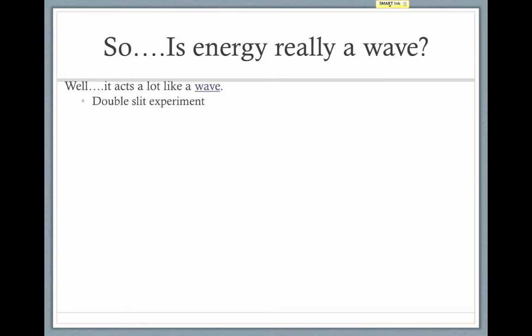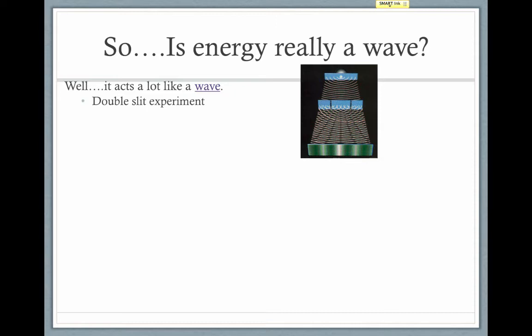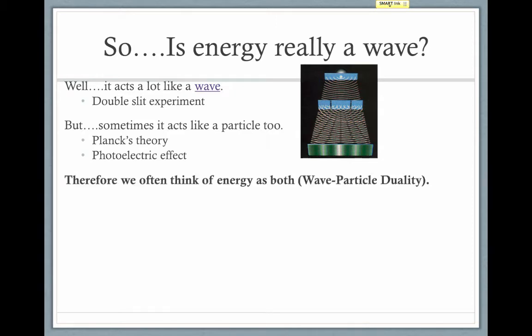This led Einstein to propose that maybe energy isn't really a wave at all. We think of energy like a wave. You probably recall the double slit experiment from physics class. This is evidence that energy behaves like a wave because you get an interference pattern when you shine light at two slits. But sometimes, energy acts like a particle, too. Planck's theory tells us that energy comes in little bits or packets. And Einstein's photoelectric effect suggests that there's something hitting the electrons, causing them to actually come off of the metal. That sounds a lot like a particle behavior.